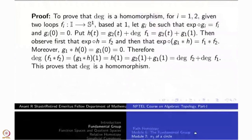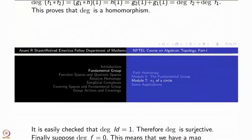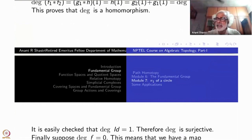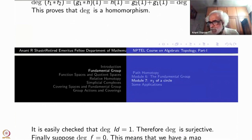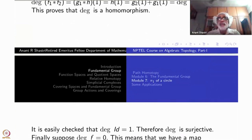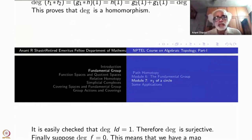Now we shall prove that this map is an isomorphism. What happens to the identity loop? If you take the unit interval T going to e raised to 2πiT, what is its lift at T equal to 0? It will be just T — the identity on T. Therefore when T equals 1, the end point will be 1. That means the degree of the identity loop is 1. Any homomorphism into ℤ which assumes the value 1 must be surjective, because 1 is a generator. So that proves that the degree map is surjective.